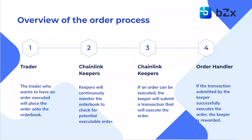So let's now go over the overview of the order process. The first step is a trader places a trade on the order book — anyone who wants an order executed will place it on the order book. The next step is Chainlink Keepers will continuously monitor the order book to check for potential executable orders, running through the whole order book state as we saw in the previous slide.